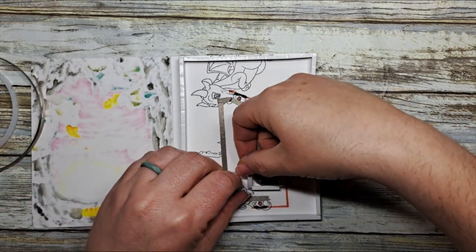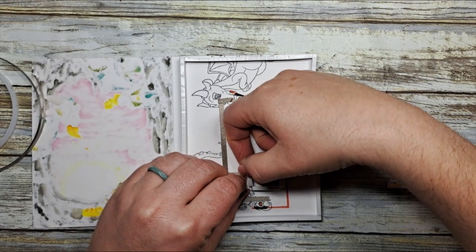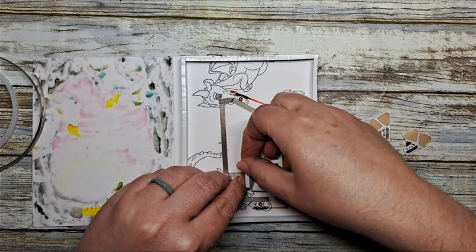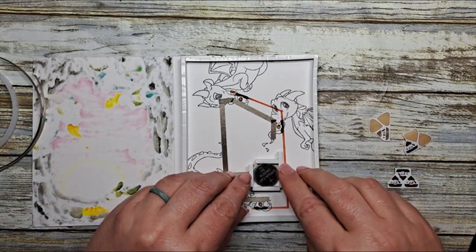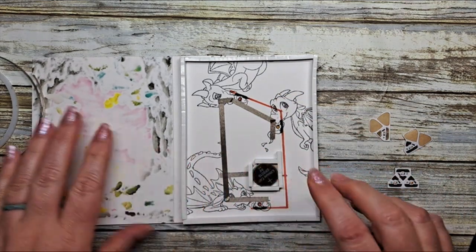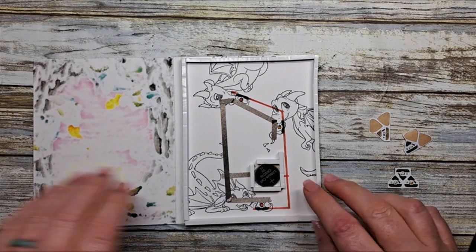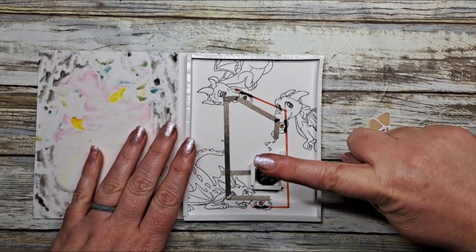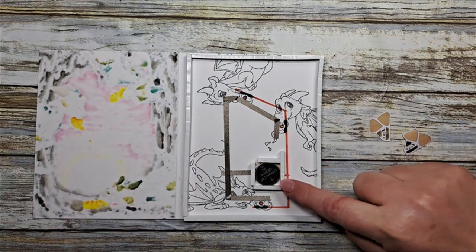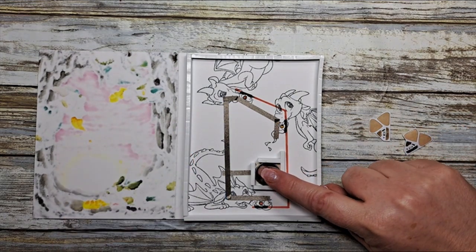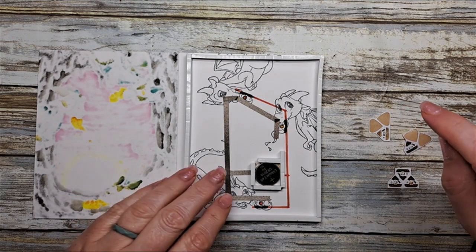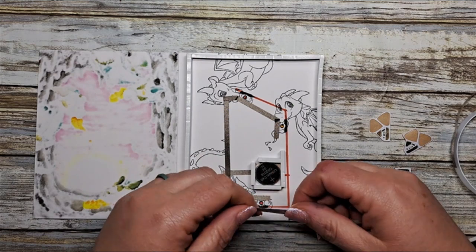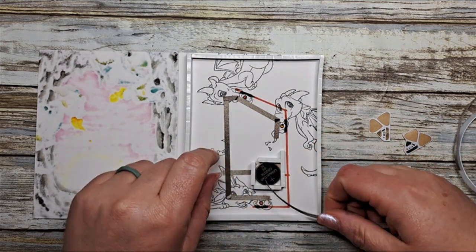Now that we have that done we need to create a little flap on the top of our battery because we need to have our positive side of the circuit to actually touch our battery. We're just going to use a piece of good old copy paper.